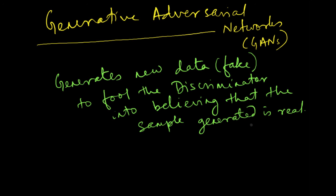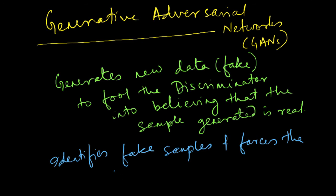This is the part, this is the job of the generative aspect of GANs and then what does the discriminator do? It identifies the fake samples and forces the generator to improve.